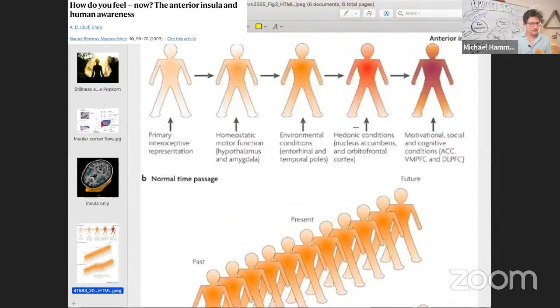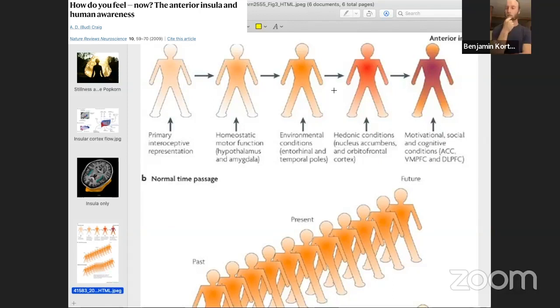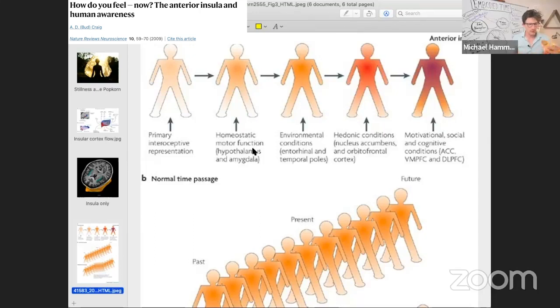How this relates to the insula is that the insula is actually creating a silkscreen layering of different kinds of information on the body map. That's really cool. So we have this primary interoception, and then this kind of homeostatic motor function, like how are we doing in relation to our equilibrium? Then we assess our environment, like I'm underwater, I could use a breath of air.